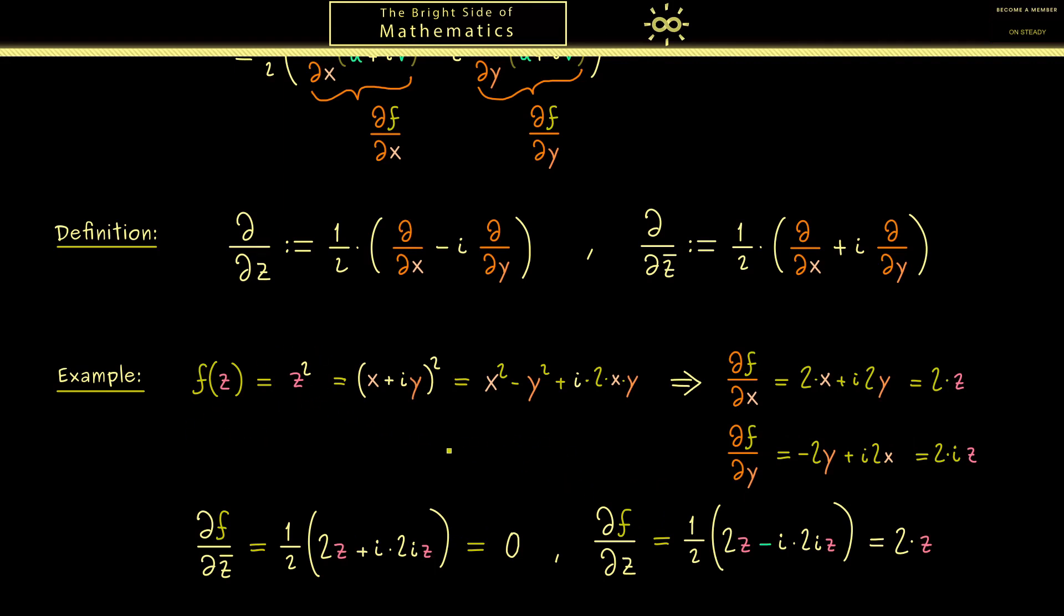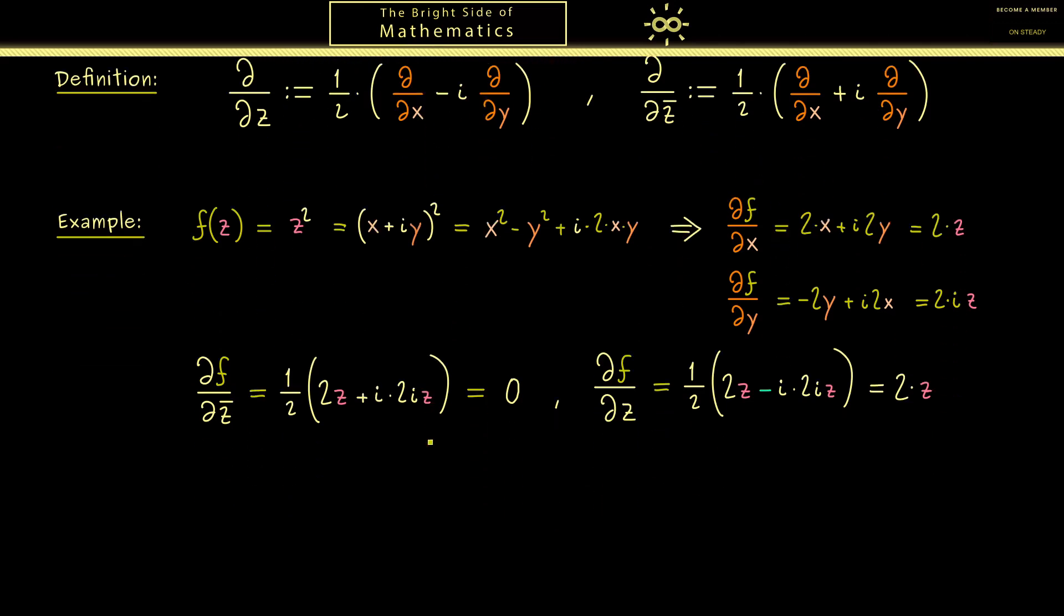Then I would say let's summarize the video by stating the important fact we have proven here. Indeed this is something one can nicely remember. Namely a complex function f defined on an open domain U is holomorphic if and only if ∂f/∂z̄ is equal to 0 at all points. Indeed this equivalence you already know because here we simply have hidden the Cauchy-Riemann equations. And then in this case as we have proven above the other Wirtinger derivative gives us the complex derivative of f. So f' can be calculated by using ∂f/∂z.